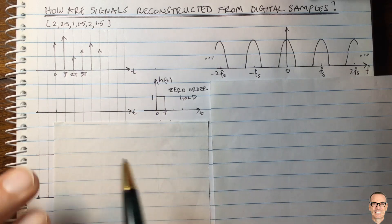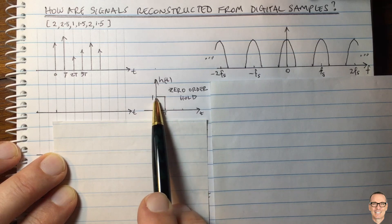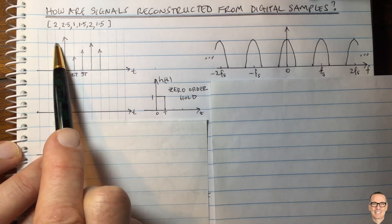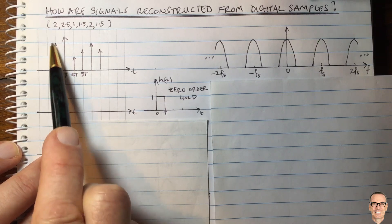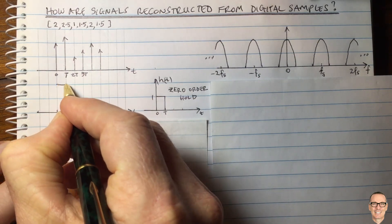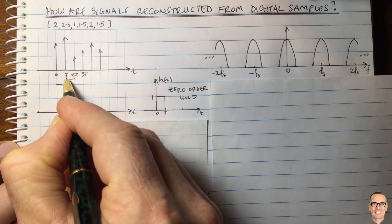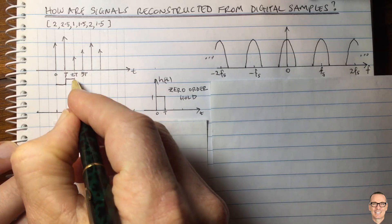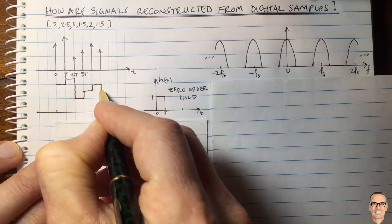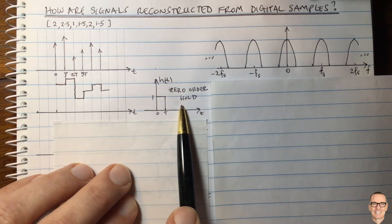This is a quite simple impulse response — it simply holds the value for that amount of time. So if we put in an impulse of height 2, we get a function with a height of 2, a straight line across. At the next time instant, we have 2.5 — a straight line across at that height. Then at 1, it comes down to 1, up to 1.5, up to 2, and back down to 1.5. This would be the signal coming out of a zero-order hold reconstruction filter.